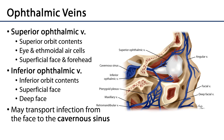The ophthalmic veins are going to drain the orbit of blood. There are typically two: a superior ophthalmic vein and an inferior ophthalmic vein. The superior and inferior ophthalmic veins can take a common pathway through to the middle cranial fossa, or they can take separate pathways. Typically the superior ophthalmic vein is going to traverse the superior orbital fissure.